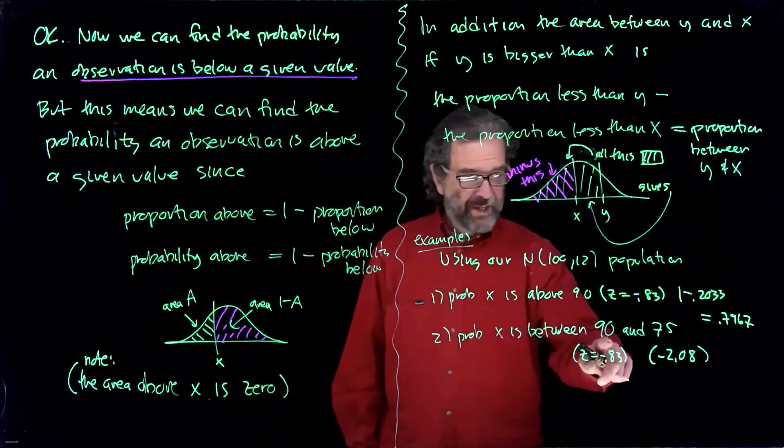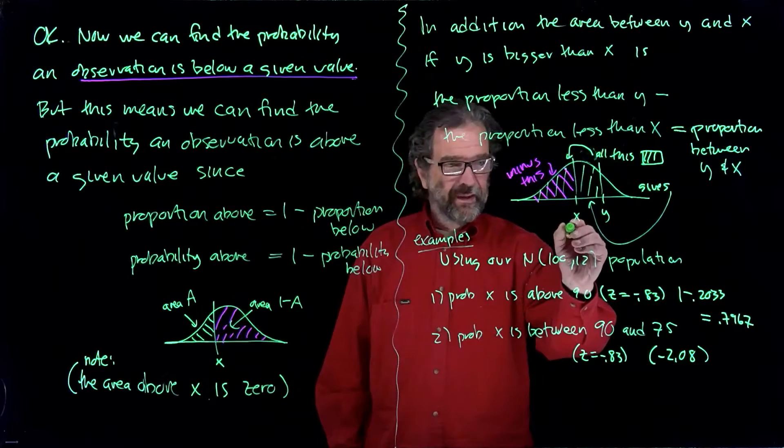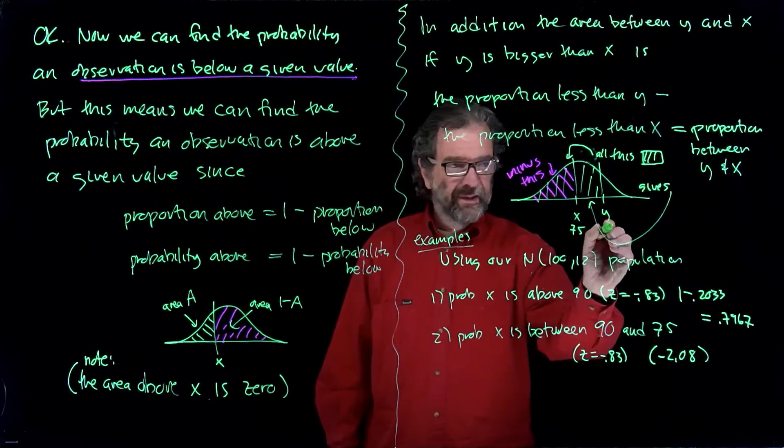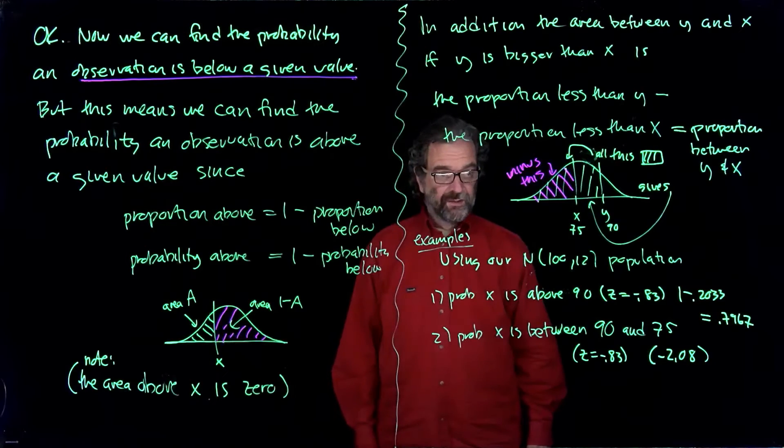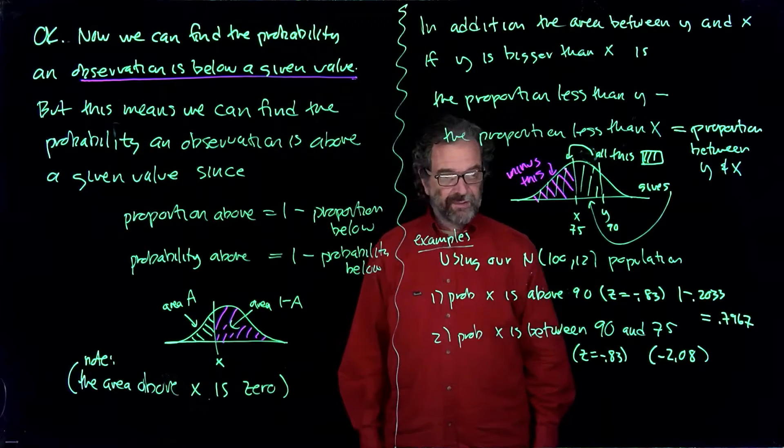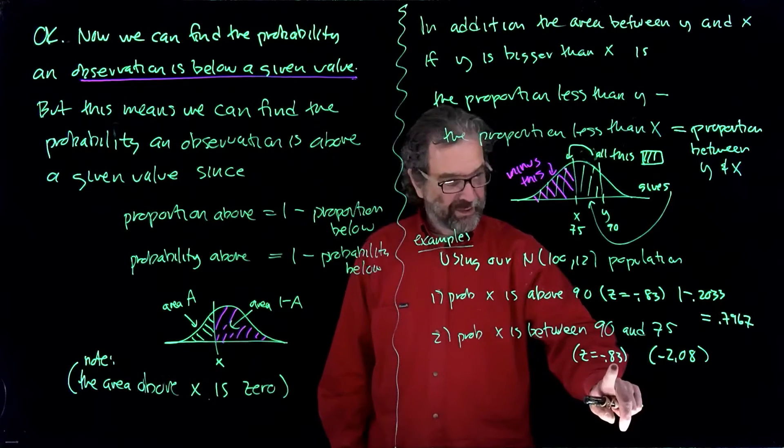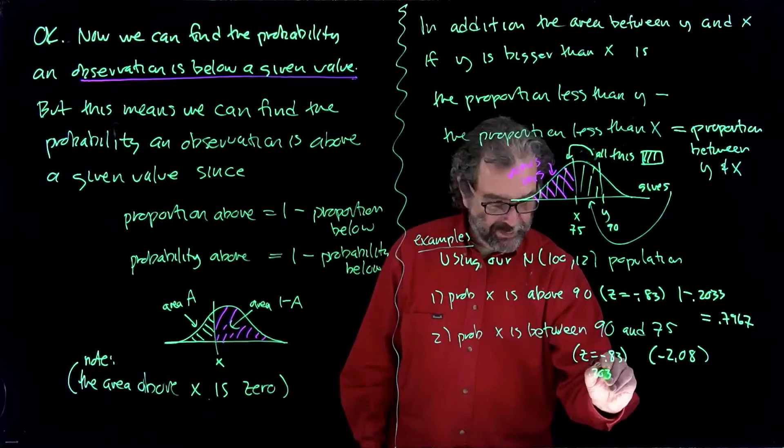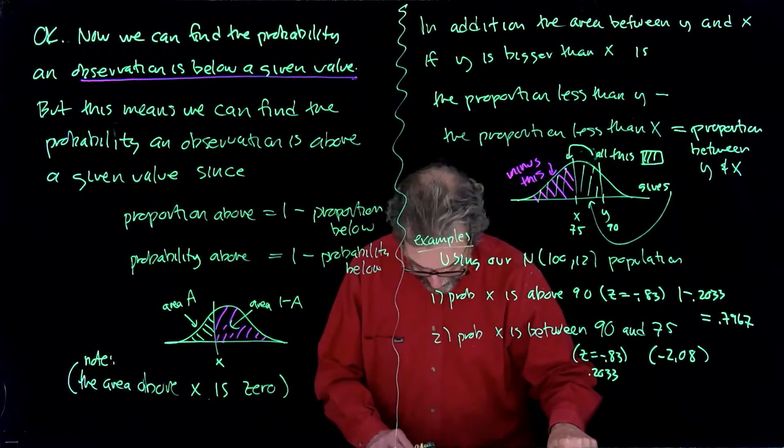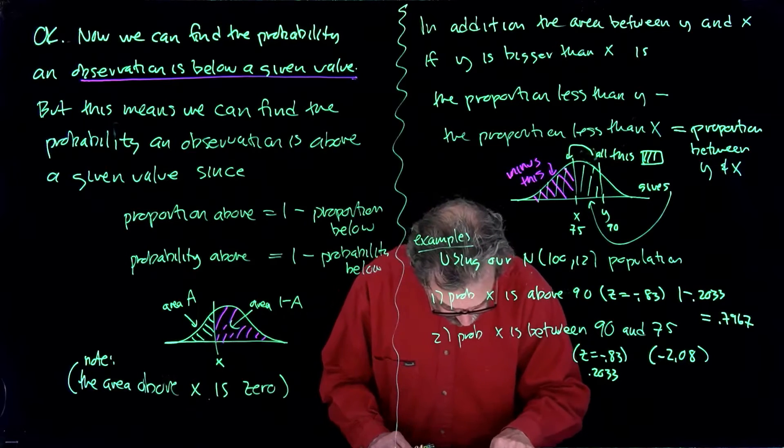And then with 90 and 75, so it'll be like 75 is here and 90 is there. So 90 is to the right, so we're going to look up the area left of negative .83. We have that already, .2033. And minus 2.08, it's way over here.